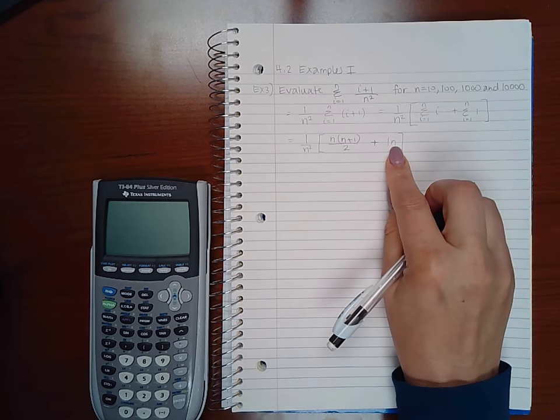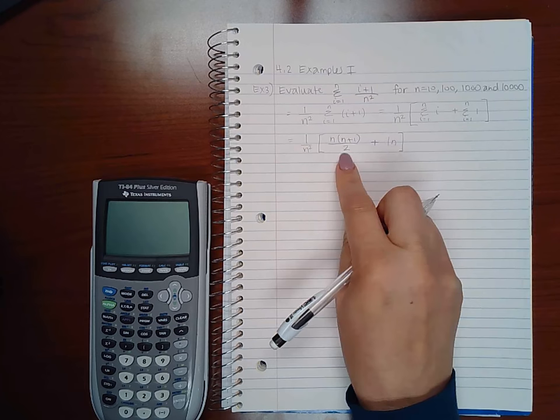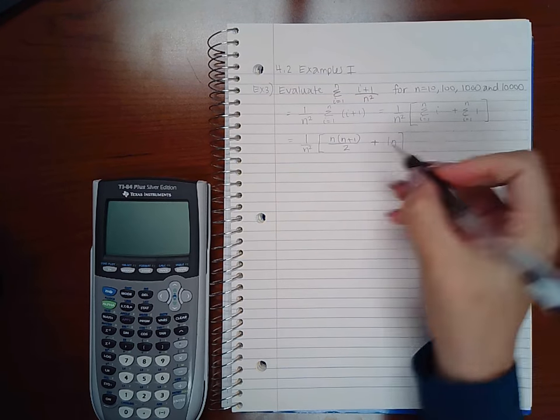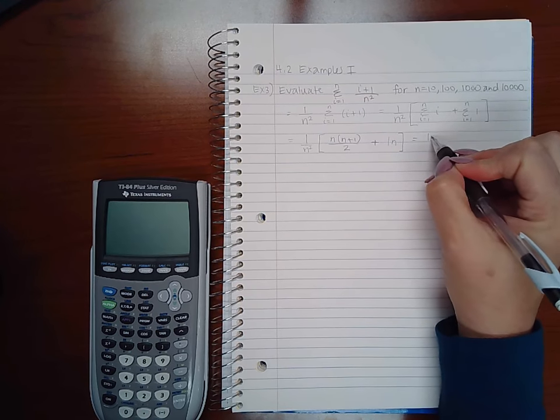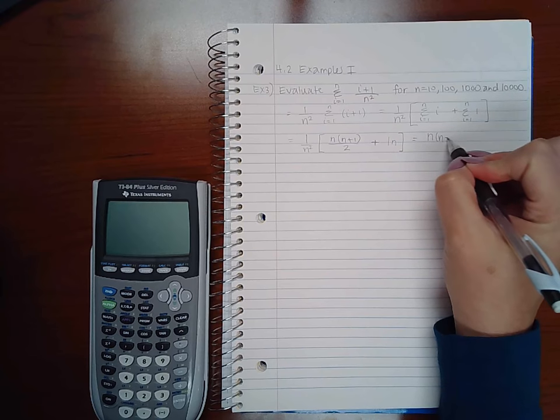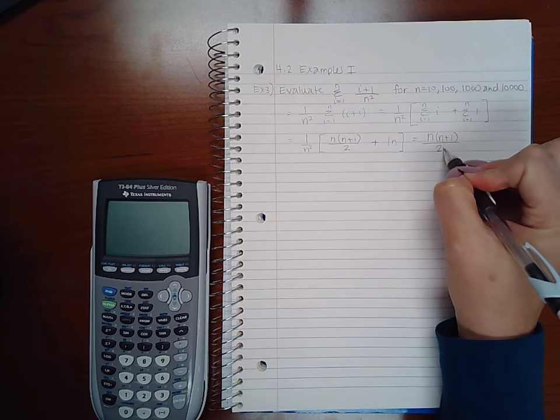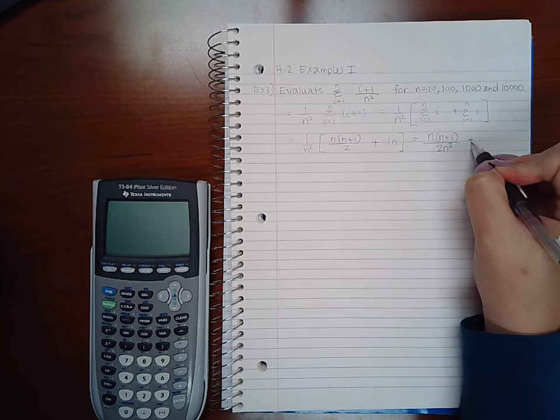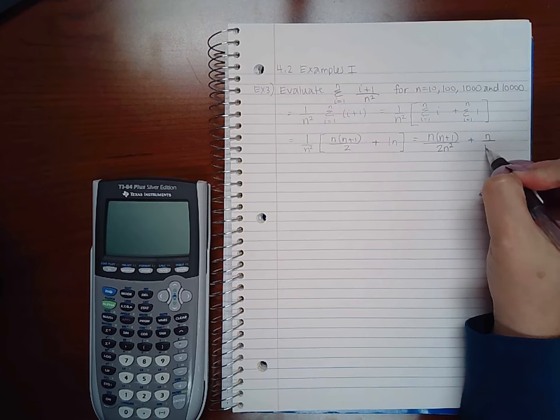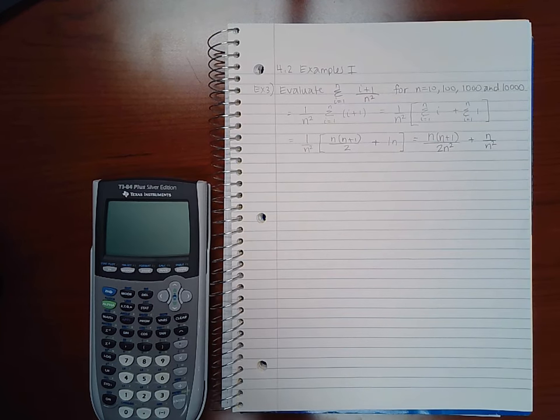So in this case, just 1n. Now I am going to distribute this n squared into this problem. So I get n, n plus 1 over 2n squared plus 1n over n squared. Now I can simplify that.